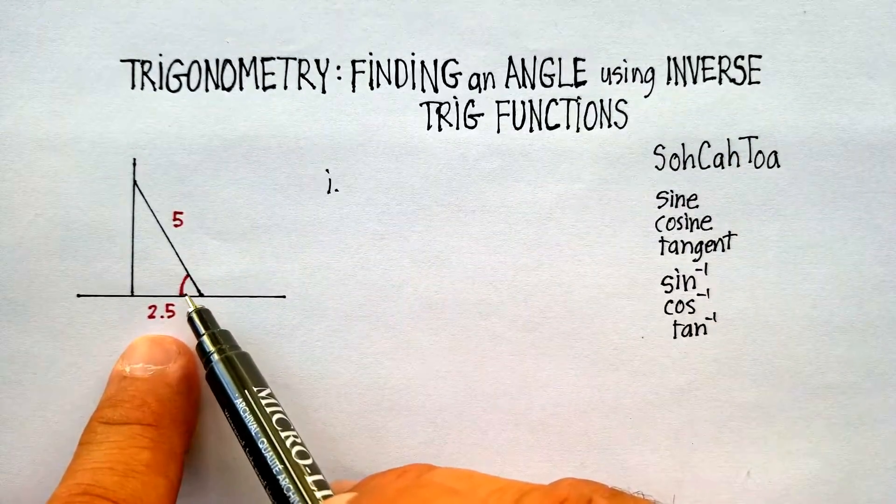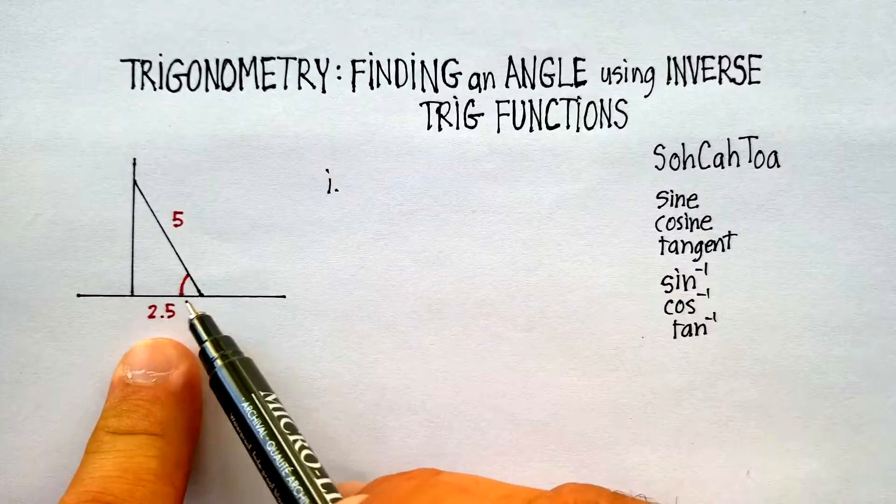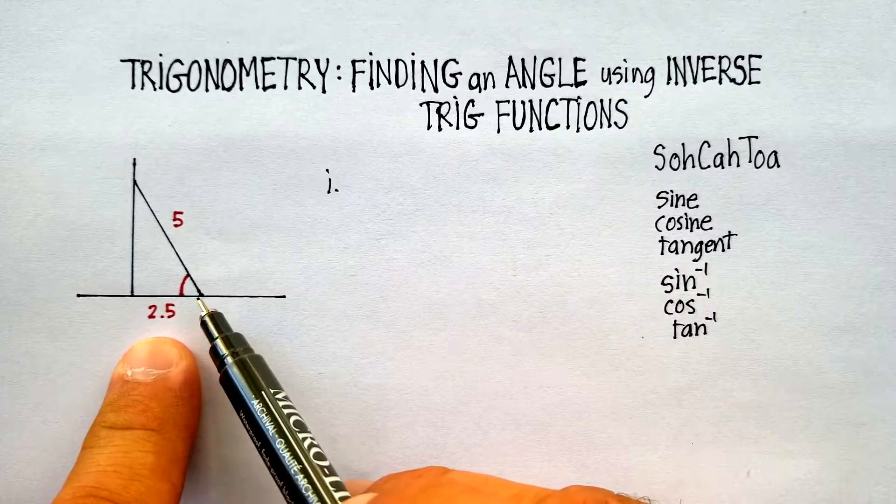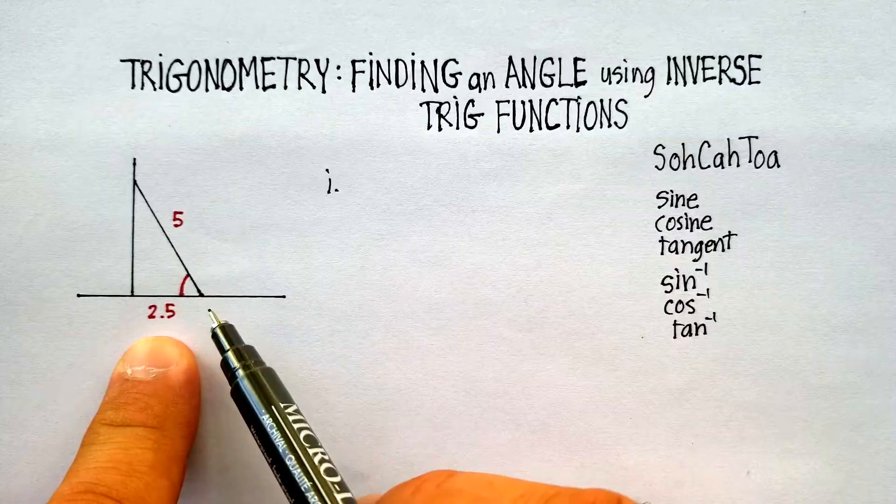Now, let's look over here. We have the adjacent side, 2.5, over the hypotenuse, which is 5.